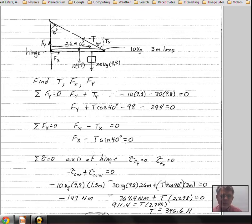It has a full 3 meters for lever arm, but T cosine 40 degrees gets us the upward component. Why didn't I use T sine of 40 degrees times 3 meters?